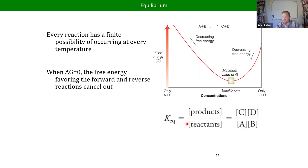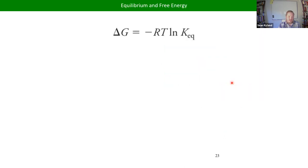The bottom of this potential energy well tells us what K is, because K is defined as products over reactants at equilibrium. Using algebra and the fact that at equilibrium delta G equals zero, we can actually solve for an equation relating delta G naught to K.